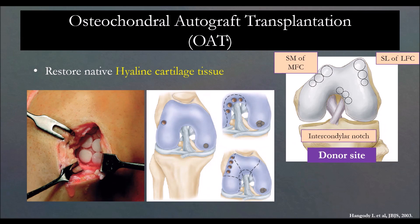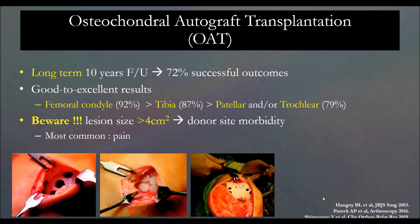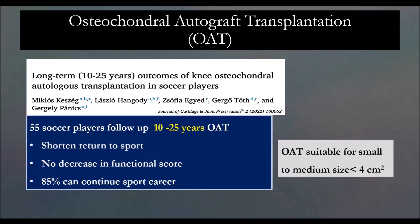Next is osteochondral autograft transplantation (OATS). It is good for small defects, but for big defects you don't have enough donor site. The recommendation is for lesions less than two centimeters or less than four square centimeters. Long-term outcome is very good because this is hyaline cartilage — 72% good and very good outcomes at the femoral condyle, followed by the tibia, patella, and trochlea. For lesions bigger than four square centimeters, there will be donor site morbidity. Long-term outcome over 10 to 25 years is pretty good, and return to sport is faster because the repair is fixed and stable right away.